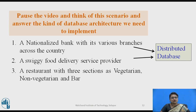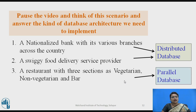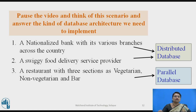The answer is: in the first two scenarios — the nationalized bank with branches at different locations across the country, and Swiggy food delivery with different delivery locations and various restaurants providing services — the data is distributed among various locations, so a distributed database is used. In the third scenario, the single restaurant with sections — vegetarian, non-vegetarian, and bar — all located within a single premises, so a parallel database is used here.